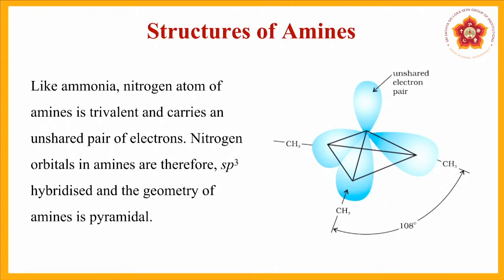Like in ammonia, the nitrogen atom in amines is also trivalent — three bonds are generated. In place of hydrogen atoms we have the alkyl group (e.g., CH3). Because the CH3 atom gives more steric hindrance due to its larger shape, the geometry of amine structures is pyramidal, caused by both lone pair–bond pair repulsion and steric hindrance from the larger alkyl or aryl groups.